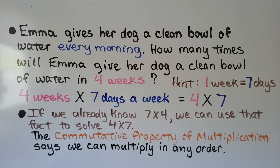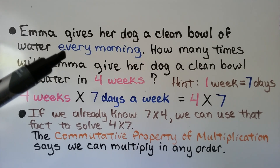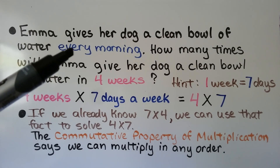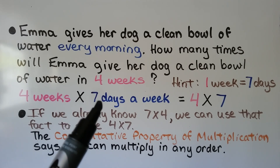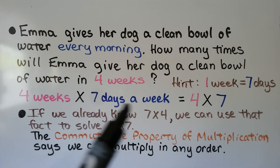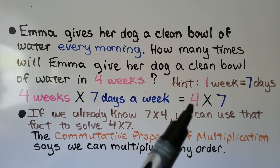Emma gives her dog a clean bowl of water every morning. How many times will Emma give her dog a clean bowl of water in 4 weeks? Our hint is 1 week equals 7 days, and she's giving a clean bowl of water every morning, so that means every day. We have 4 weeks times 7 days in a week, which equals 4 times 7.